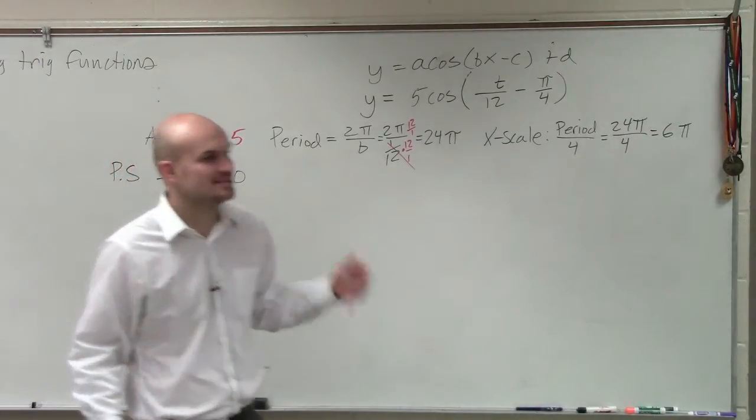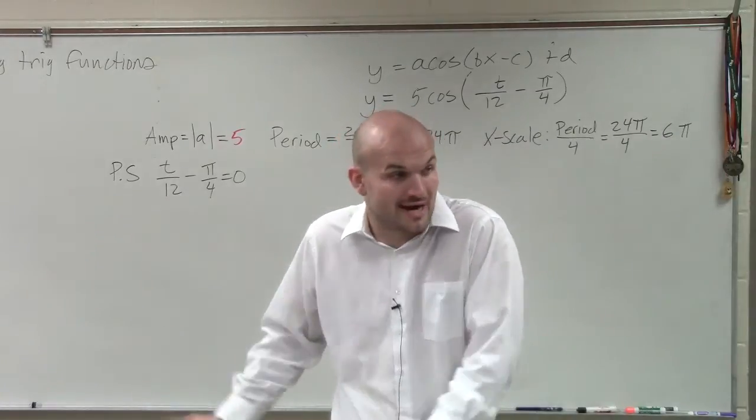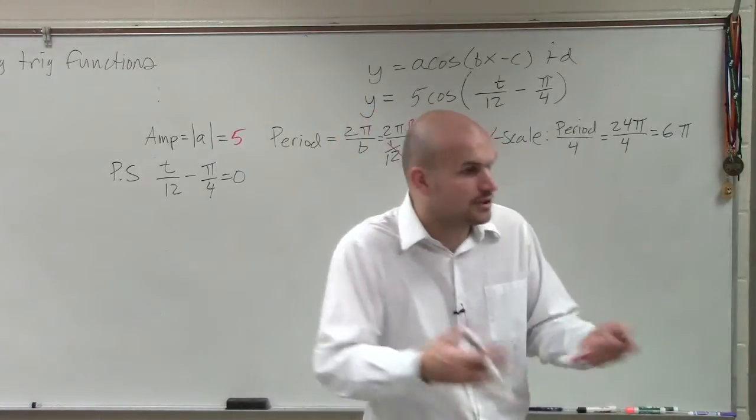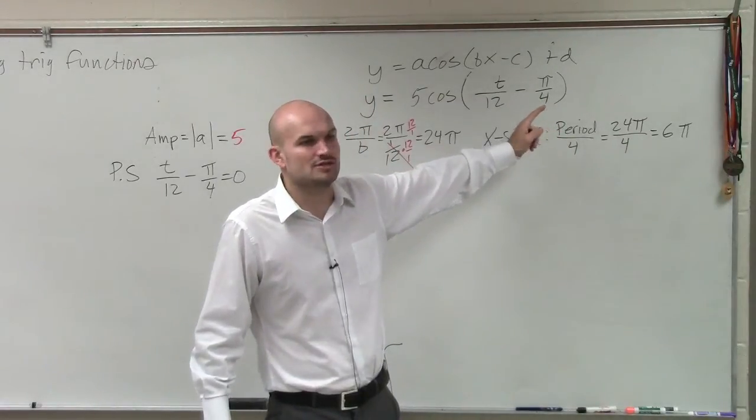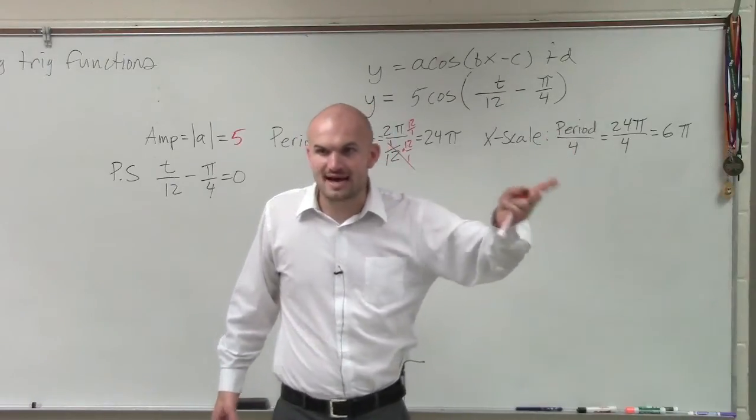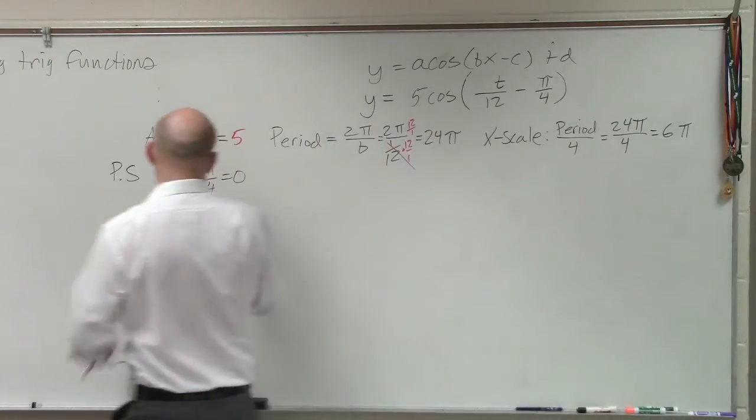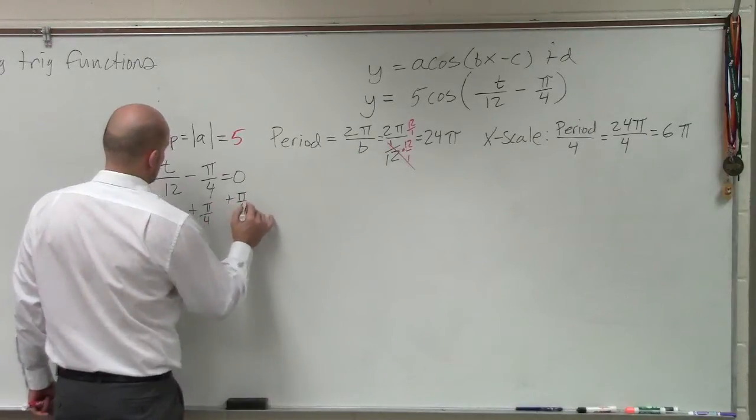Because what does everybody in this class want to say? Because this is what we did. This is what it was like for quadratics. This is what it was like for exponential and logarithmic. You say, oh, my phase shift is minus π/4. That means I shift π/4 to the right. It's very common, but it's not always that case. So you set it equal to 0. You add π over 4 to both sides.